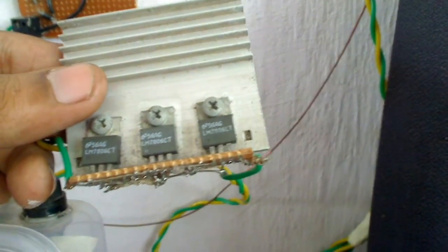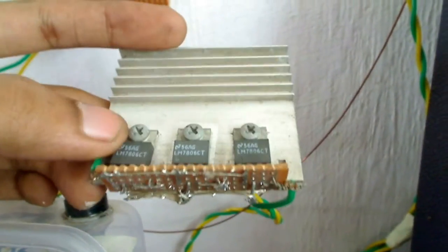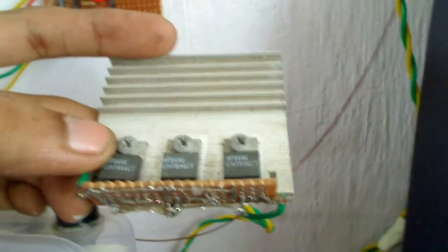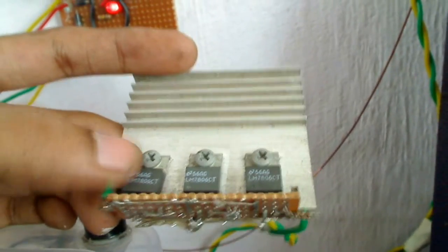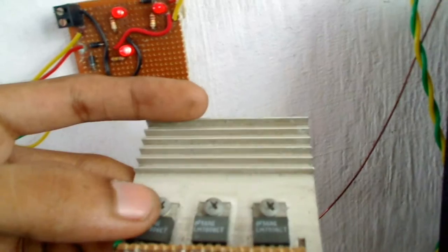There are three 7806 regulators connected in parallel to increase the current rating. So each can give up to 1.5 amps and three in parallel can give about 4.5 amps. So I made this so that if I want to extend the number of LEDs I can easily do without replacing the regulators.